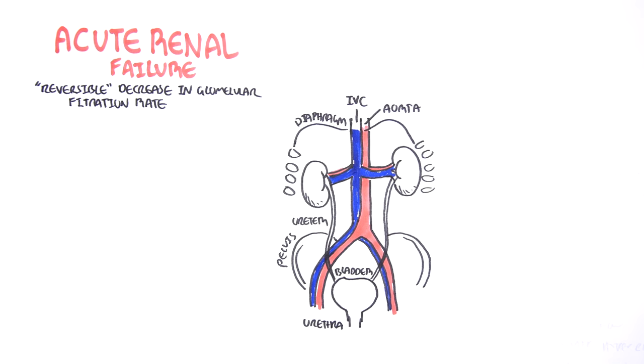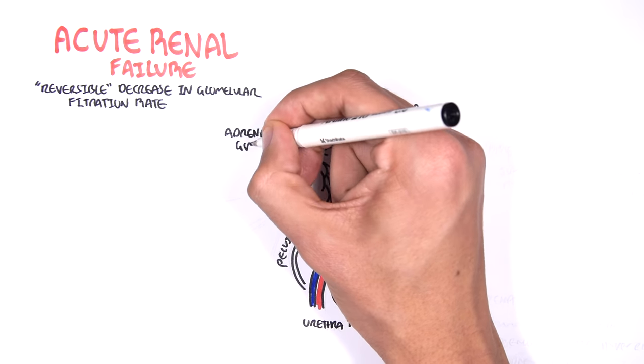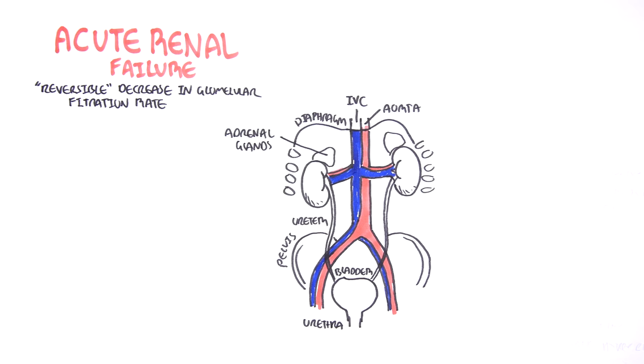Now, above the kidneys, we have glands known as adrenal glands, which are important because they produce some important hormones.